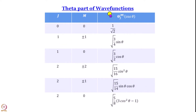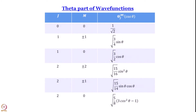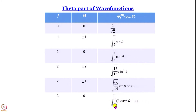For j = 1 you can have 3 values of m: 0 and ±1. When m = ±1, the theta part is √(3/4)·sin θ, and when m = 0 for j = 1 the theta part is √(3/2)·cos θ. When j = 2 you can have 5 values of m. For m = ±2 we get √(15/16)·sin²θ, for m = ±1 we get √(15/14)·sin θ cos θ, and for m = 0 with j = 2 we get √(5/8)·(3cos²θ − 1).